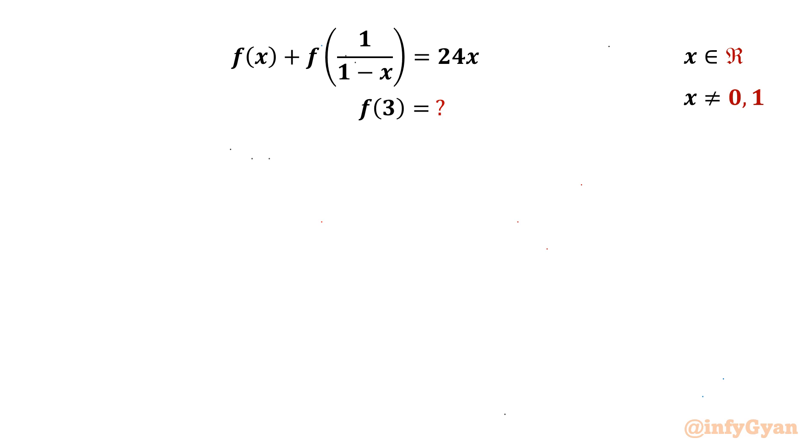Our equation is f(x) + f(1/(1-x)) = 24x, where x belongs to real numbers. Then we have to calculate f(3) where x cannot be 0 and 1.